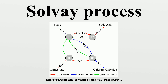The Solvay process results in soda ash from brine and limestone. The overall reaction is: 2 NaCl + CaCO3 → Na2CO3 + CaCl2. The actual implementation of this overall reaction is intricate. A simplified description can be given using four different interacting chemical reactions. In the first step, carbon dioxide passes through a concentrated aqueous solution of sodium chloride and ammonia. In industrial practice, the reaction is carried out by passing concentrated brine through two towers.